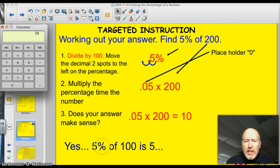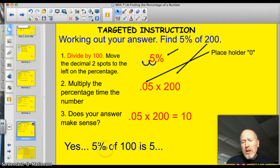We get 10. Does our answer make sense? Well, yeah, it does, because 5% of 100 would be 5, right? So, 5% of 200 will be double that, which is 10. Divide by 100 by moving the decimal two spots to the left. Multiply that decimal, then, by the number. Check to see if your answer makes sense.